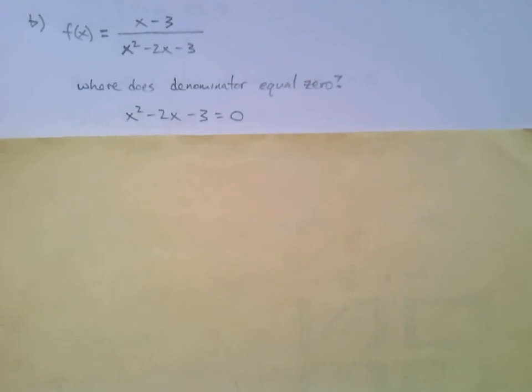This one, x squared minus 2x minus 3, factors nicely for us: x minus 3 and x plus 1. So we get the two solutions at x equals 3 and x equals negative 1. We know right away that it's at these two x values where our function is discontinuous.